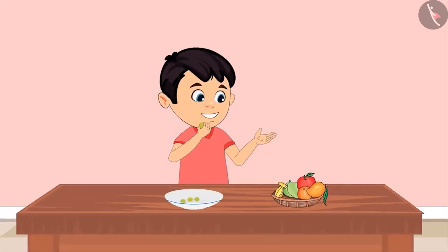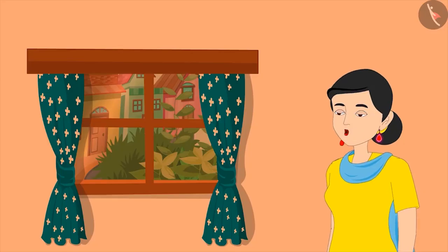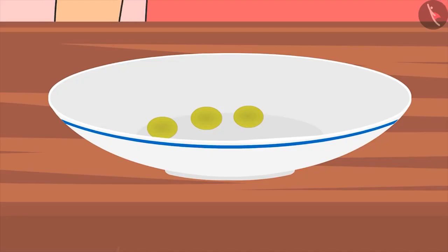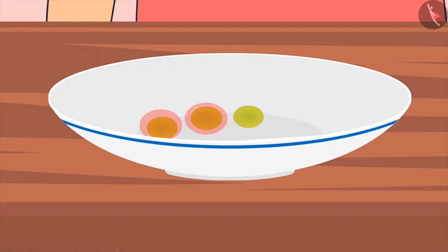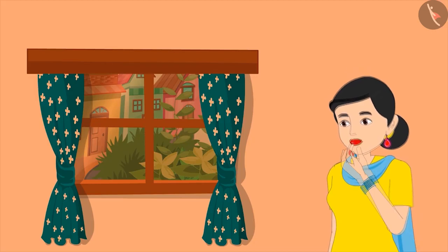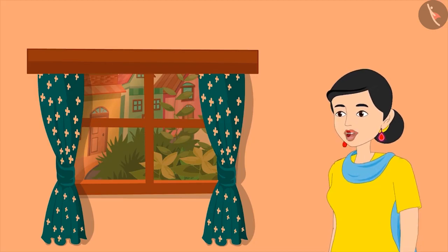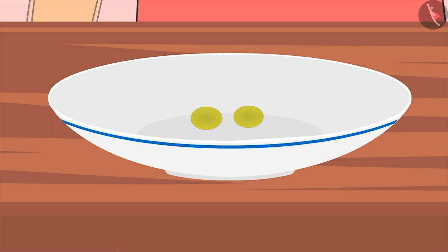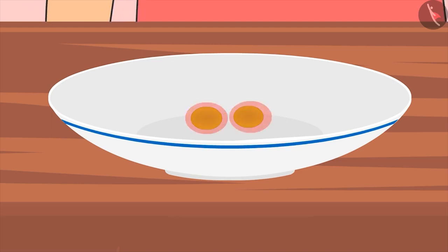Chotu says: I have eaten one out of four grapes. Now tell me how many grapes are left? If I ate one out of four grapes, then now there are one, two and three — that means three grapes. Let me eat one out of the three grapes. Now tell me how many grapes are left? Out of three, if you ate one grape, then one and two are left — that means two grapes.